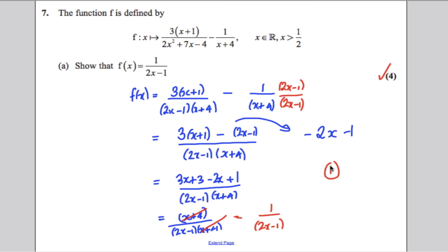So step 1, factorize. Step 2, look to cancel. Step 3, if adding or subtracting fractions, common denominator. Step 4, combine plus expand. Step 5, factorize plus look to cancel, and cancel if appropriate and you'll get yourself the answers.